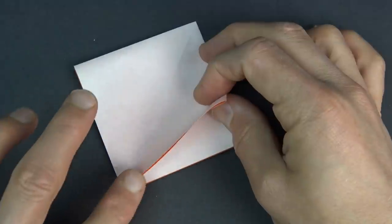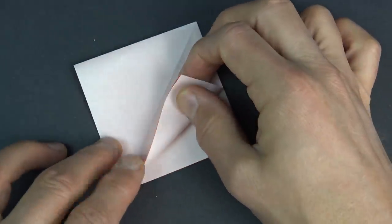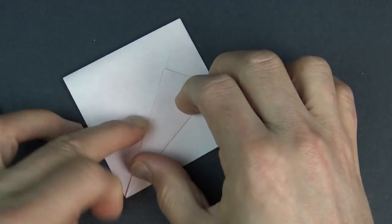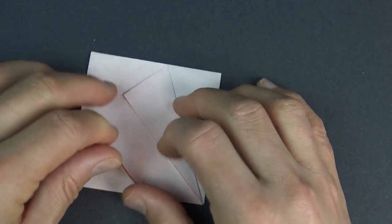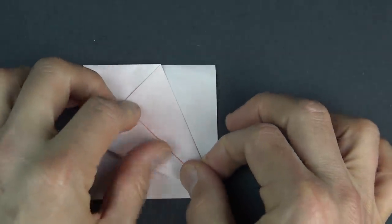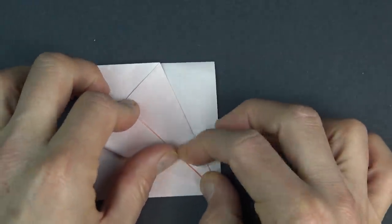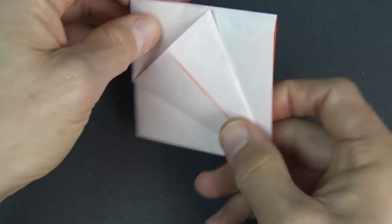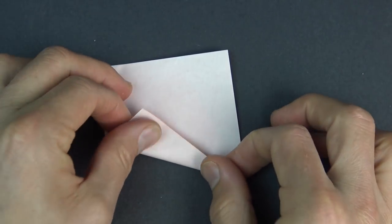Now fold this flap up so that these edges touch the middle line and repeat on this side. And turn over and repeat on this side.